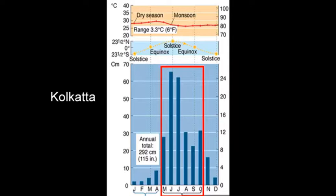Here we have a bar graph showing rainfall throughout the year in Kolkata — also referred to as Calcutta — in India. The months are shown at the bottom beginning with January and ending with December. We can clearly see a definite period of higher rainfall in the summertime compared to a drier period from November to April.